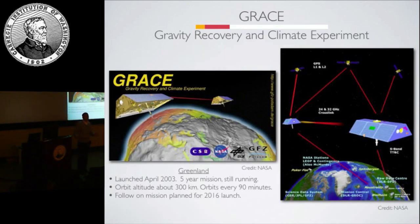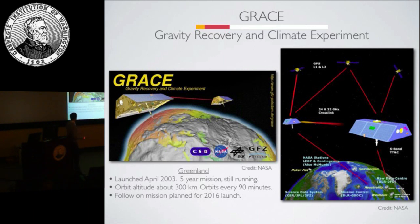Some of the first gravity satellites were the Lageos satellites in the 1970s — basically a half-meter ball full of corner cubes, where you shoot lasers and measure the reflection to detect orbit changes. The orbit altitude of the satellite is proportional to the resolution of the gravity field you can get. One of the big advances was the GRACE satellites, launched in 2003. The GRACE mission had two satellites following each other in orbit, at only about 300 kilometers altitude, orbiting every 90 minutes. We have roughly about 10 years of data out of it.